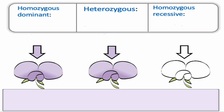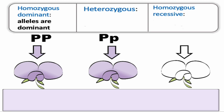Looking at the first flower to the very far left, we have the genotype of capital P, capital P. This is known as homozygous dominant — both alleles are uppercase, both alleles are dominant. In the middle flower, this is known as being heterozygous. In heterozygous, you have two different alleles. The uppercase letter represents the purple flower, and the lowercase p represents the white flower.